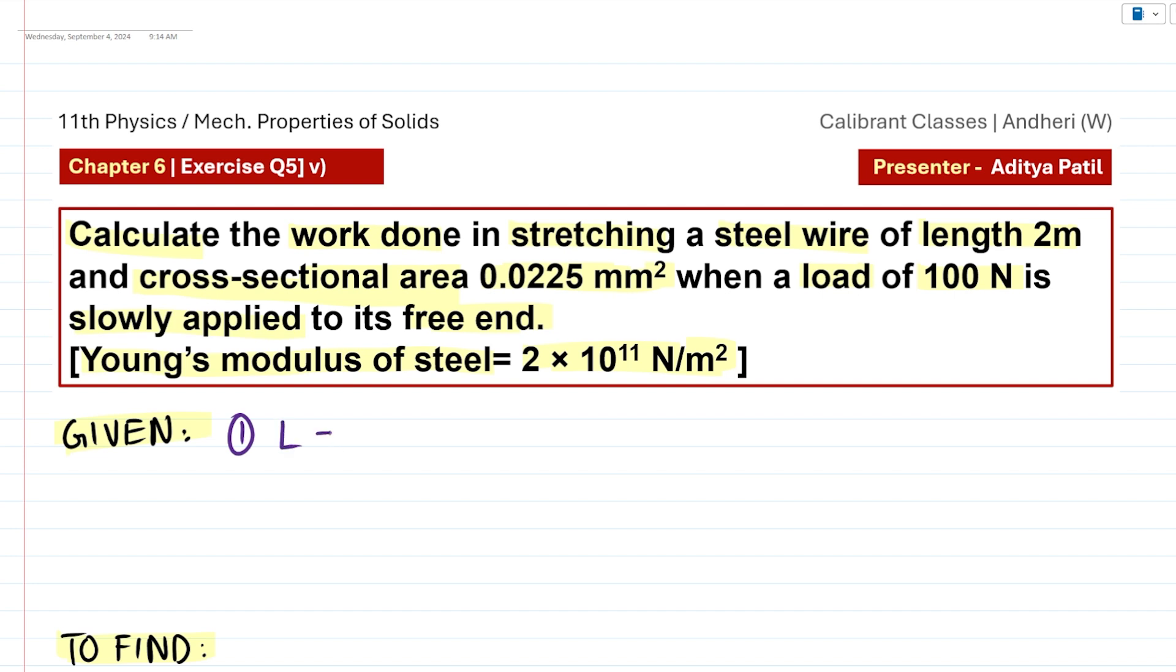So the first data given to us is the length of the wire as 2 meters. The information about the cross-sectional area we represent as capital letter A said to be 0.0225 mm². Now we have to convert mm² into its SI counterpart. So 0.0225 mm² is 0.0225 × 10⁻⁶ meter square. So that's the conversion factor.